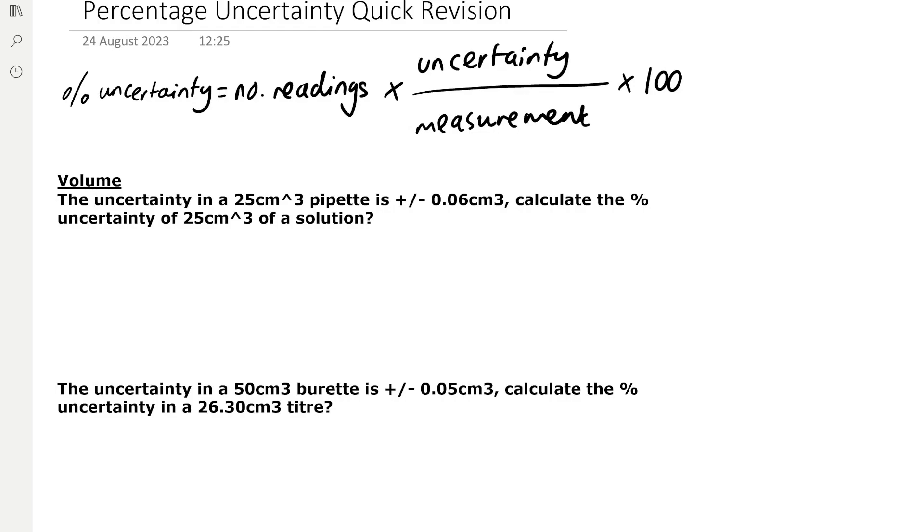For volume, the uncertainty in a 25 centimeter cubed pipette is plus or minus 0.06 centimeters cubed. And they're asking us to calculate the percentage uncertainty of 25 centimeters cubed of a solution. So if we put that into our formula,